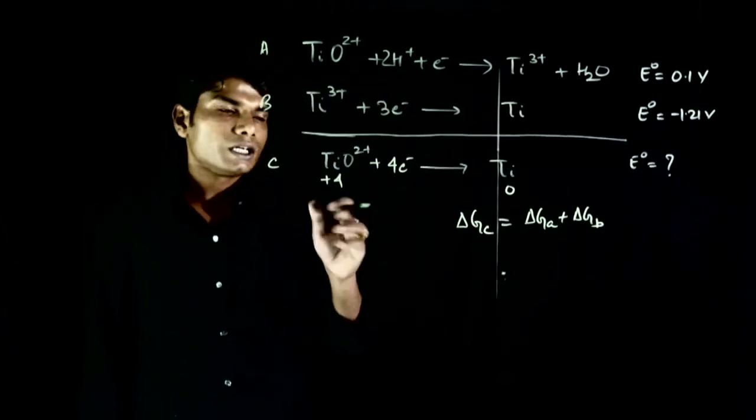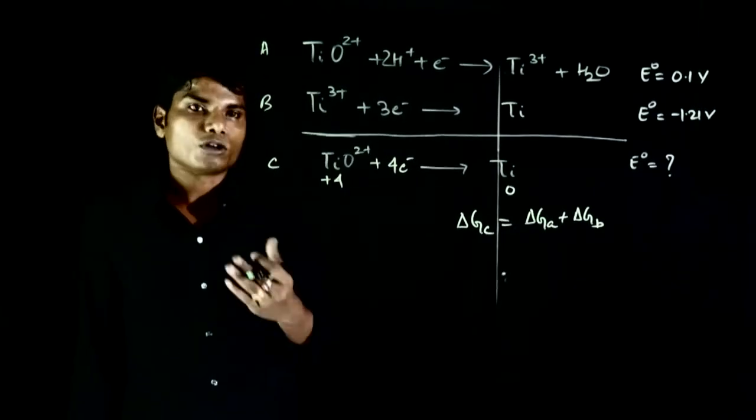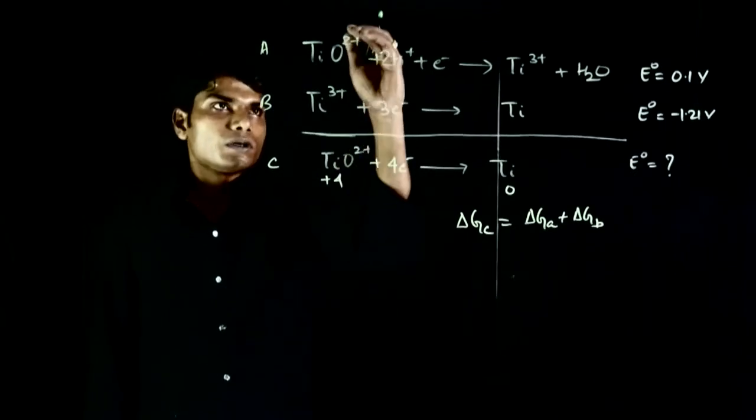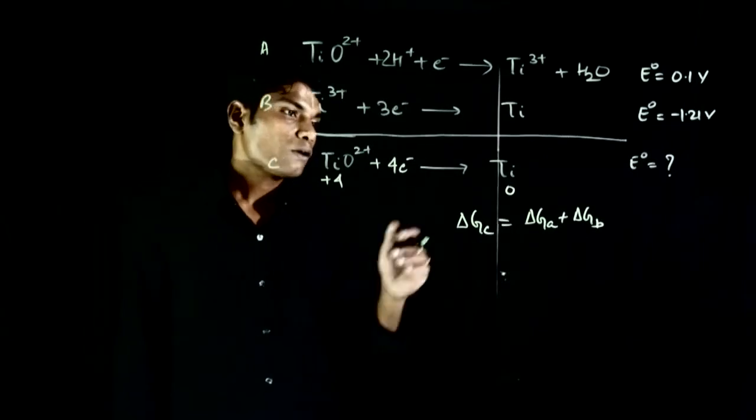Because, this 3rd reaction, reaction C, is obtained by adding A and B as we know. So delta G we add. Now,